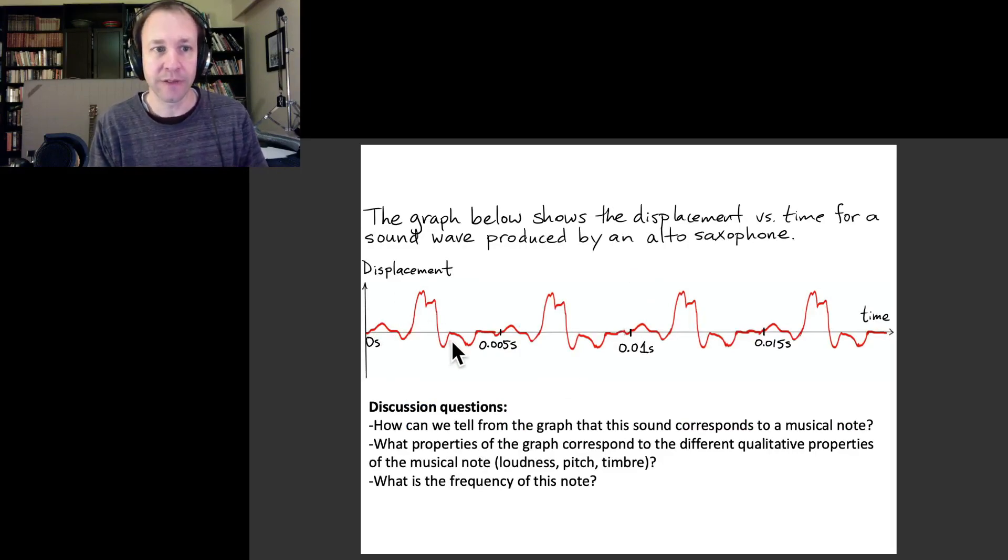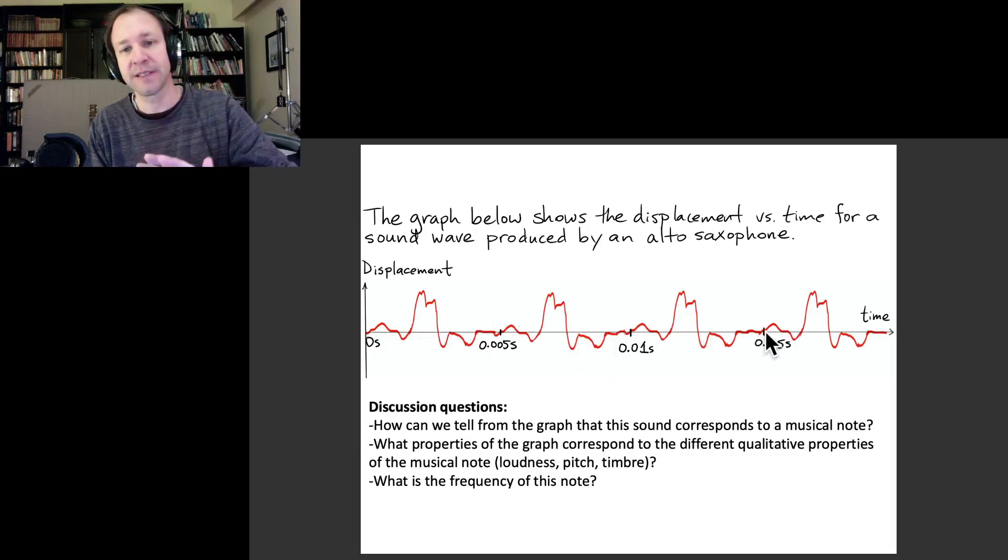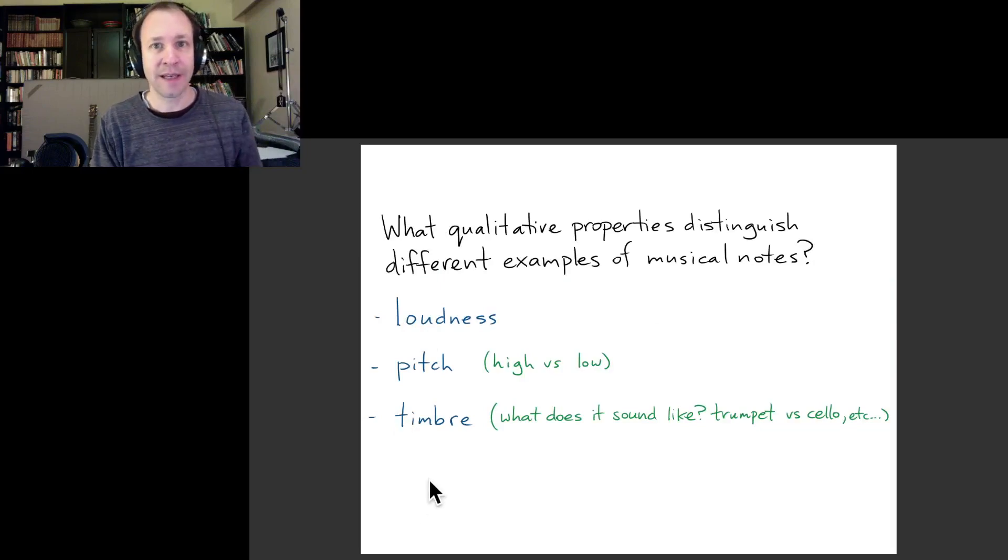This would be the time graph of displacement versus time for the air in a sound wave. This particular graph is actually one that I made using this microphone and playing a note on an alto saxophone. So this is the actual displacement versus time for a sound wave on a saxophone for a particular note. I have a few questions below that I want you to think through, and then we'll talk about the answers to these questions and understand how the properties of this graph are related to these properties that we thought about distinguishing different musical sounds.